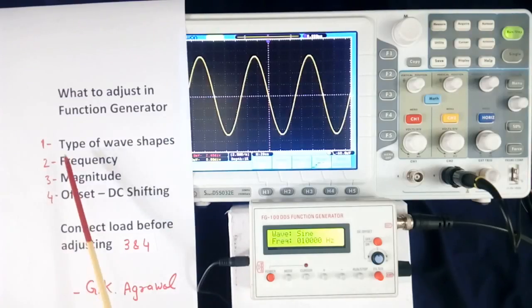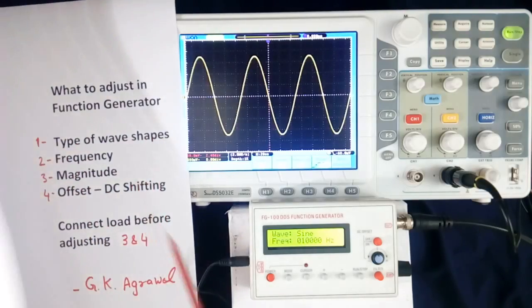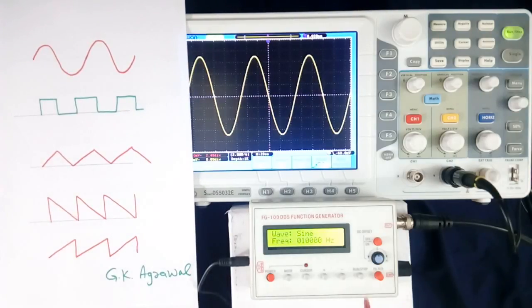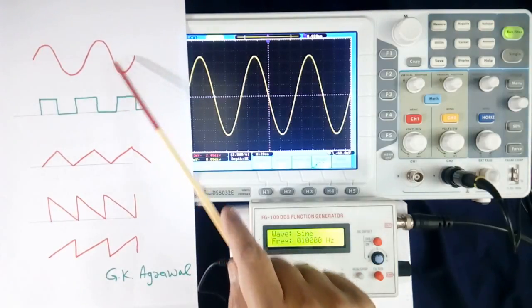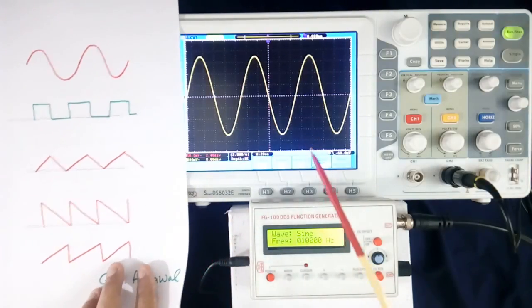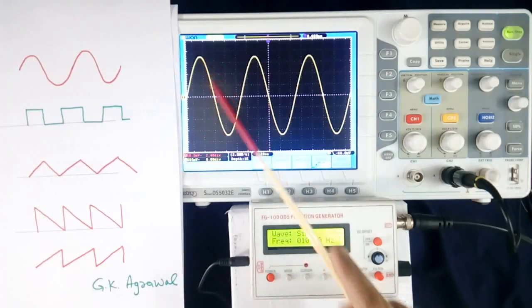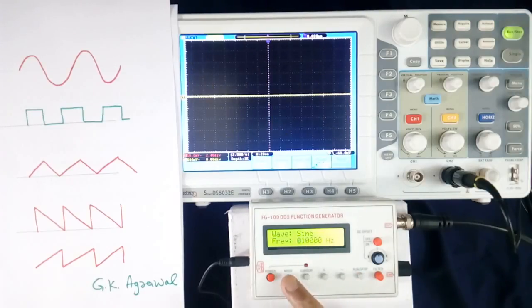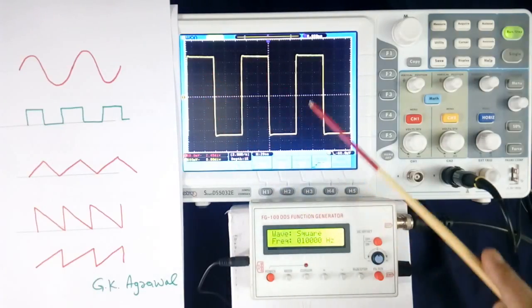Now first setting was type of wave shape. In this function generator, 1, 2, 3, 4, 5 types of wave shape can be generated. See this is sine wave. This is square wave. Now in my case, I have to switch off output and then select mode. This is square now. Then press again. Now this square wave has come.